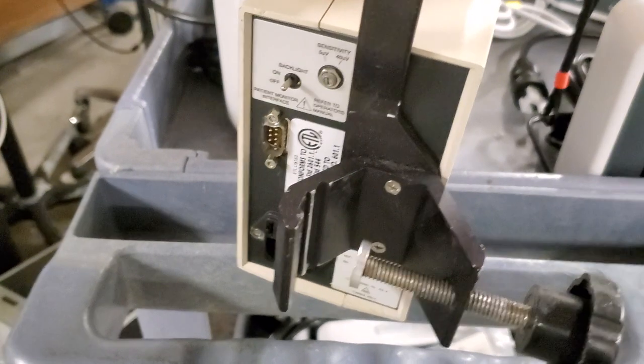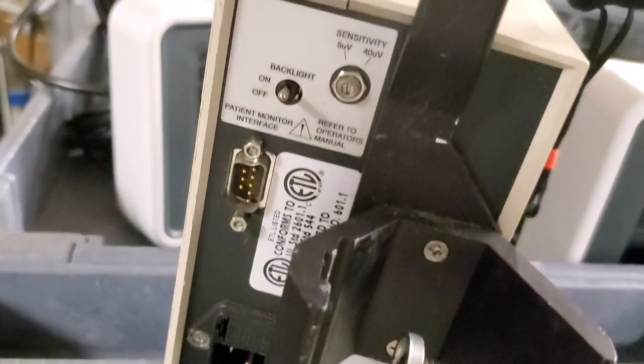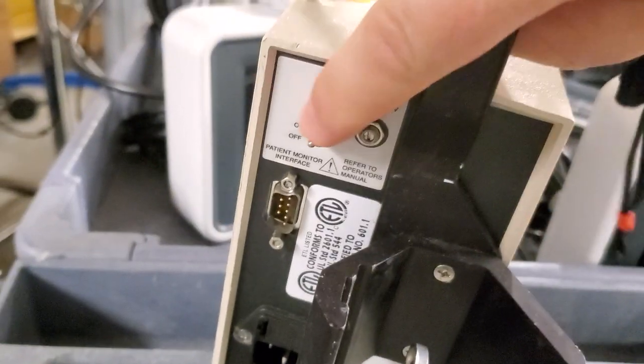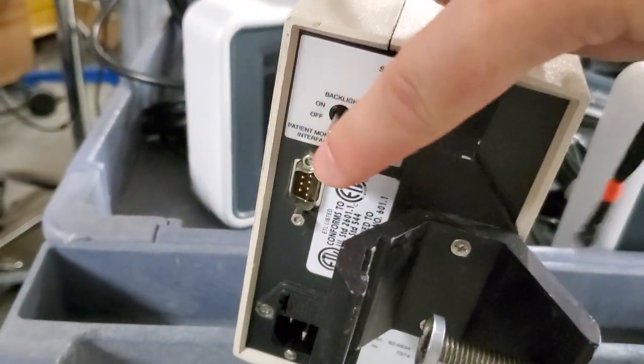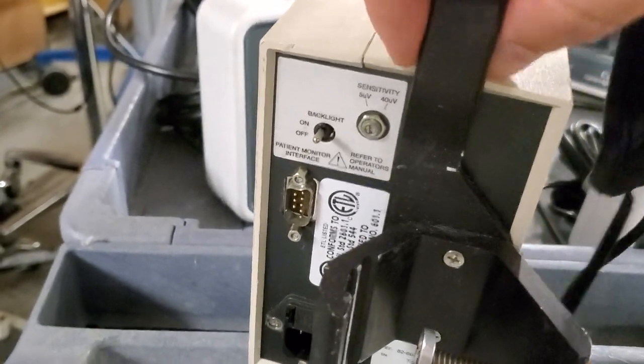You can see the pole clamp is an afterthought. It was added on the rear. It's got a serial data out port, very old school. You can see it's got a backlight switch. It's a physical switch on the back. Never had one of those break. Awesome.